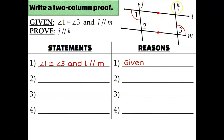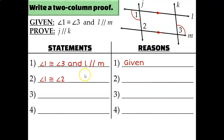To show that line J and line K are parallel, I need a special pair of angles. If I could show that angle 2 and angle 3 are congruent, that would be enough since they're corresponding angles created by K and J. But I only know that angle 1 and angle 3 are congruent. Looking elsewhere in the diagram, angle 1 and angle 2 are alternate interior angles — on opposite sides of transversal K and in between the parallel lines L and M — which means they're congruent by the alternate interior angles theorem.